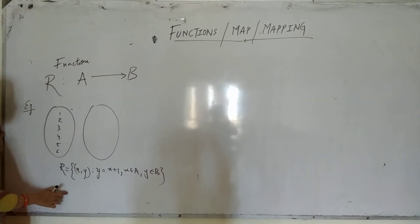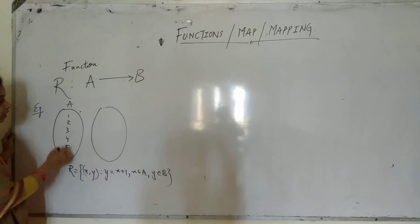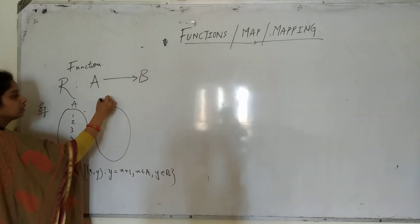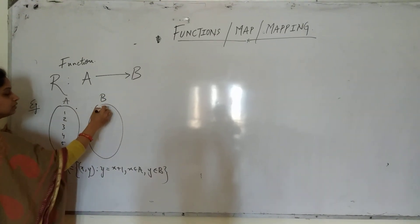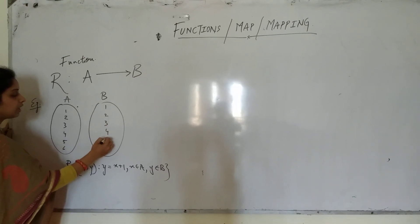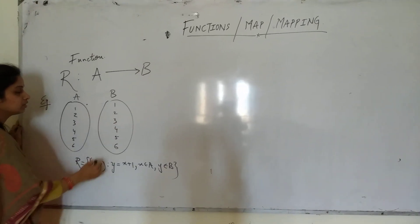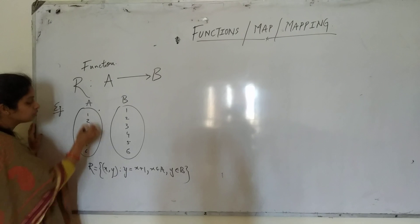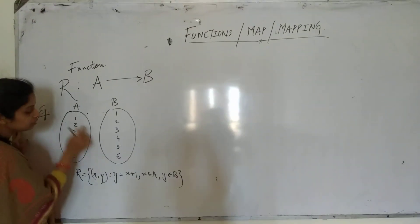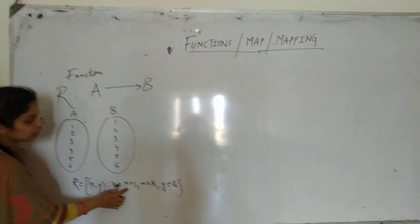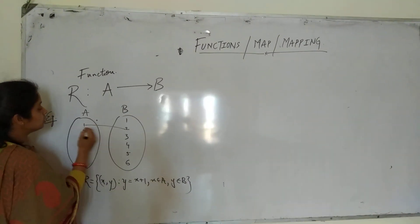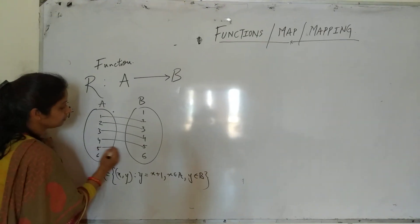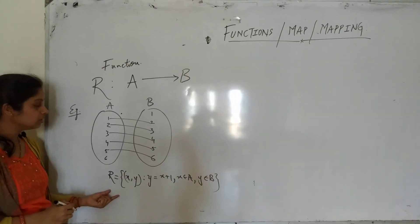Then if this is A with elements 1, 2, 3, 4, 5, 6 and B is also 1, 2, 3, 4, 5, 6 — both sets are just the same. So what is the image of 1? If we put 1 here, then y is 2. So this is the image of this relation.